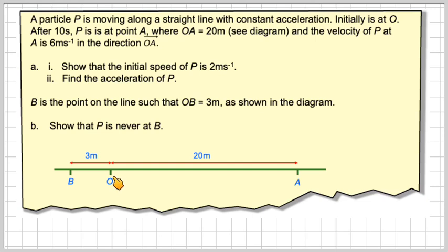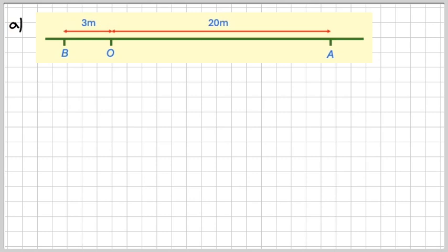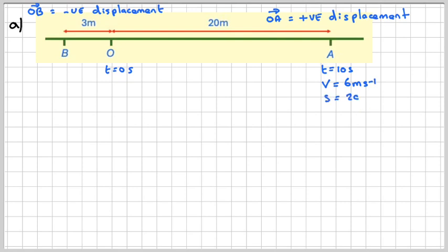So we've got a particle which is going to start here. Using the diagram, we know that OA, we're going to make OA positive displacement, and then OB negative displacement. We know that T is 0 at the origin, and here T is 10 seconds, and the velocity is 6 metres per second, and S is 20 metres.